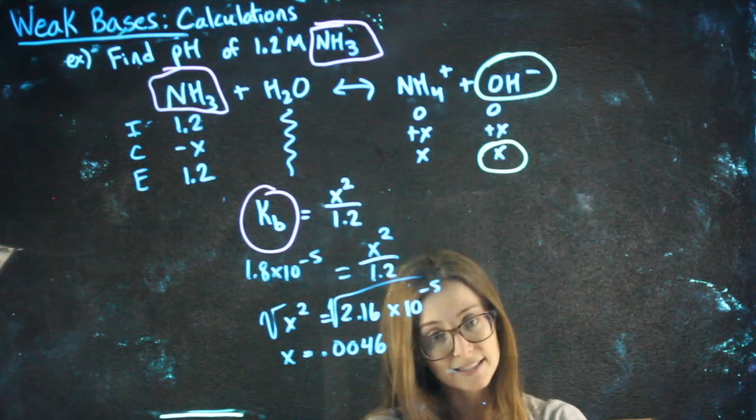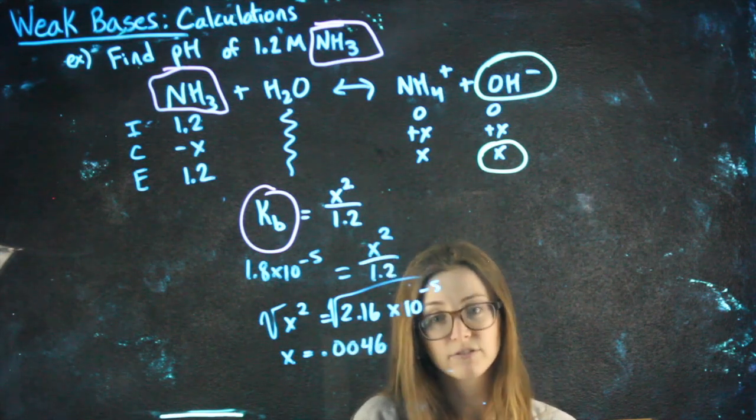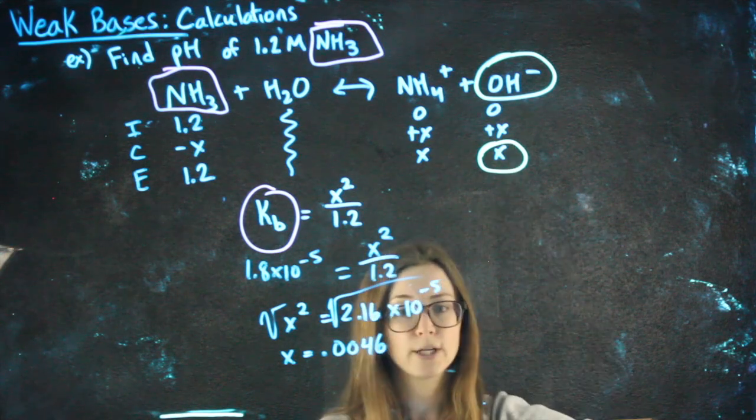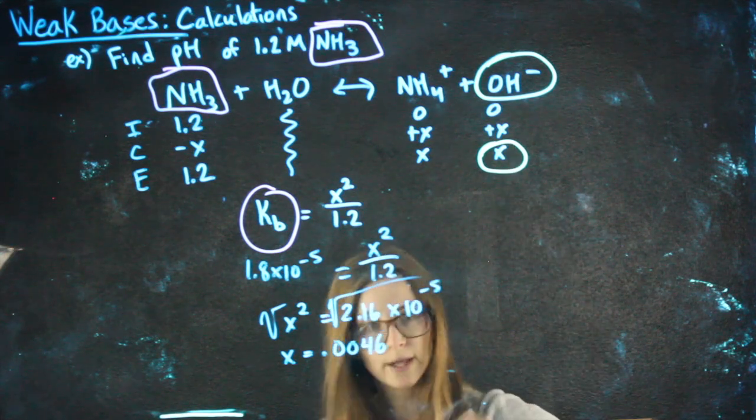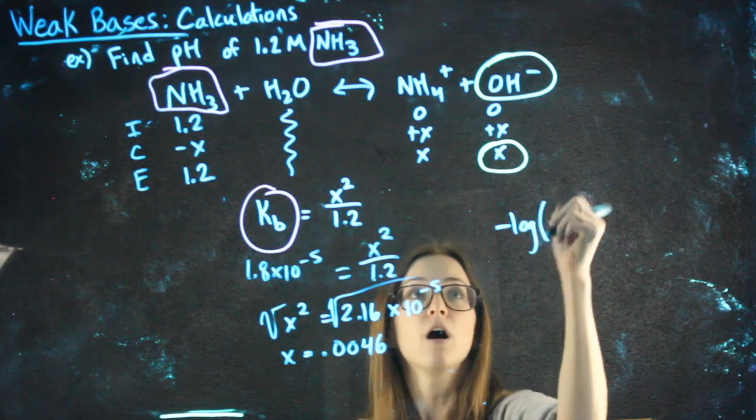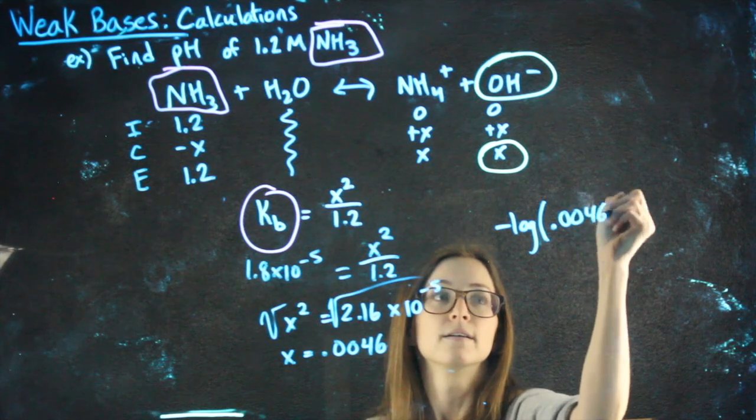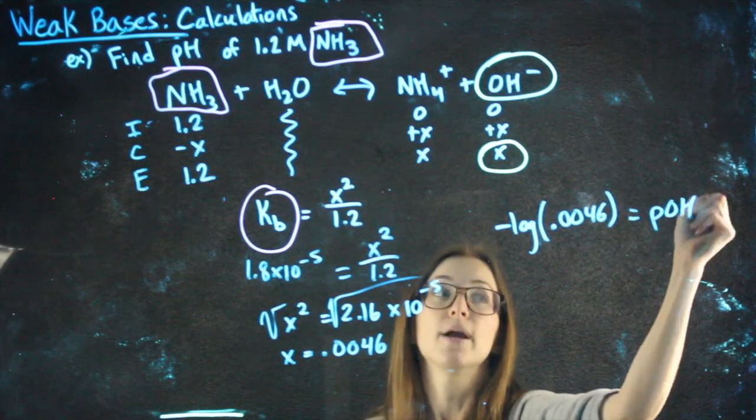So for weak acids, the x always represented the H+, because that's what fell off. For weak bases, our x is representing our OH-. So that's important because I'm looking for the pH. But when I negative log my x, my OH-, that's getting me my pOH.